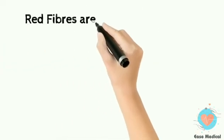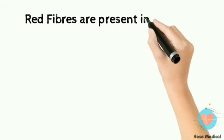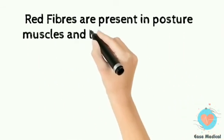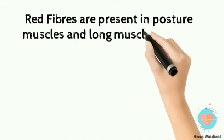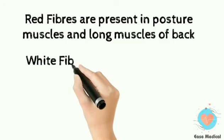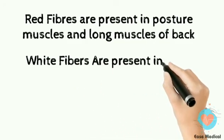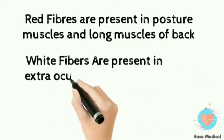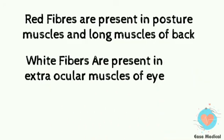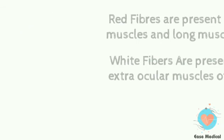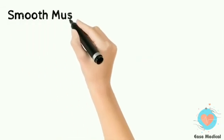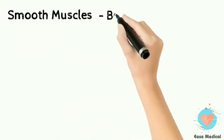Red fibers are present in posture muscles and the long muscles of the back. White fibers are present in the extraocular muscles of the eye.